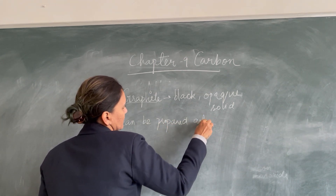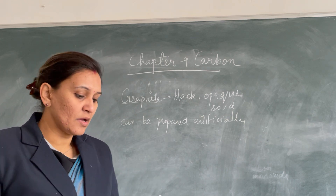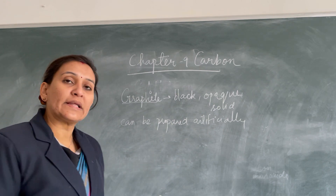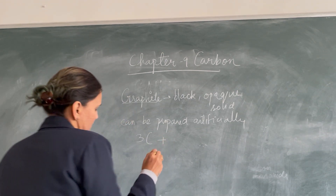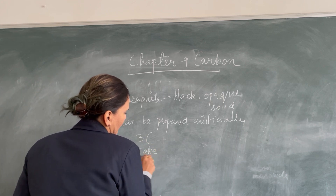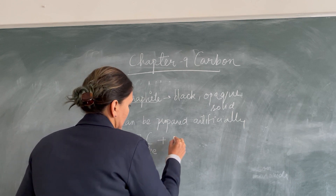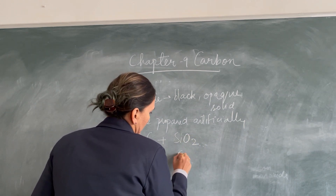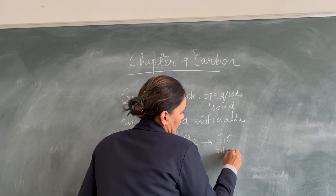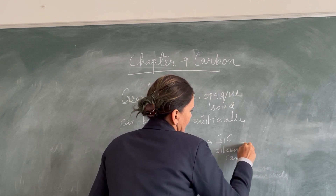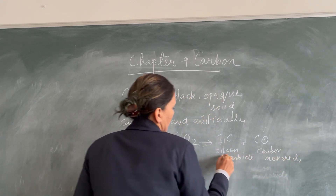While we talk of the preparation of graphite, it can be prepared artificially by strongly heating coke with silica in an electric furnace. The reaction is: 3C (where C stands for coke, the amorphous form of carbon) is strongly heated with silica, that is SiO₂.